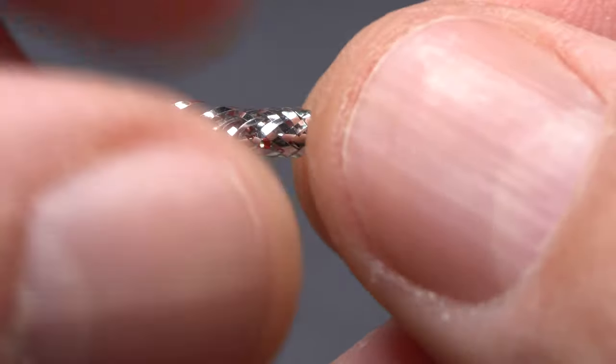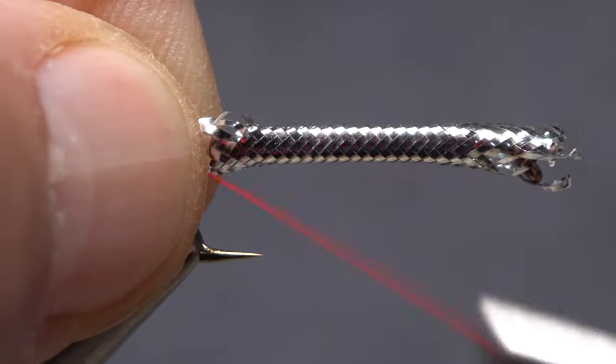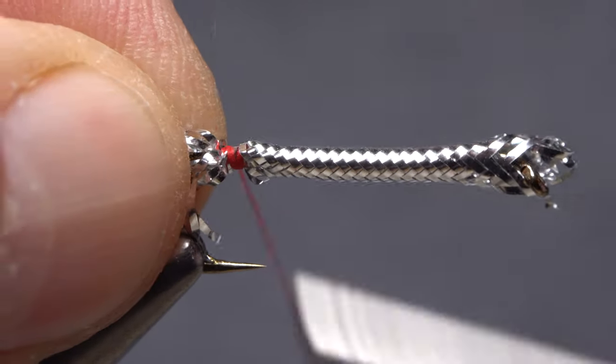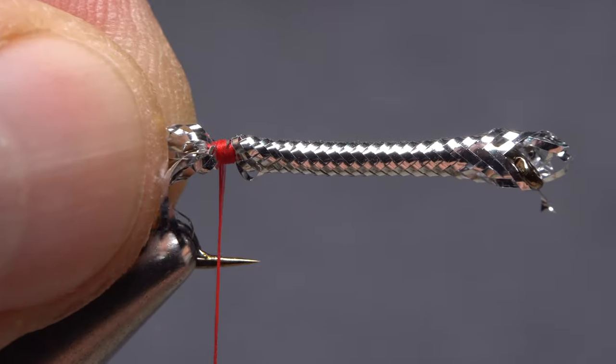Slip the most frayed end of the now hollow tube over the hook eye so it extends past the bend. Then start taking wraps of tying thread to anchor the tubing in place.